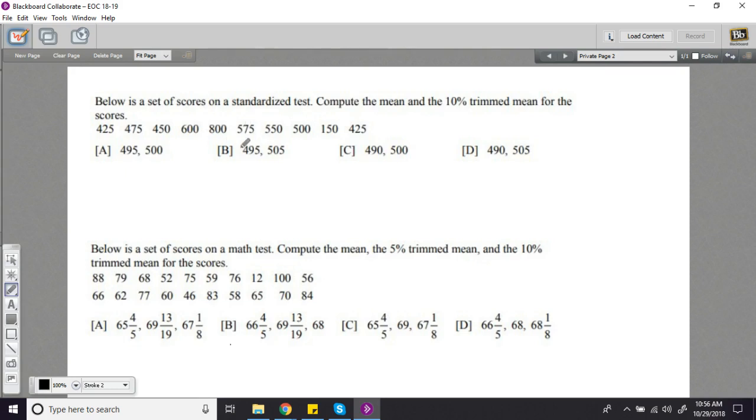In this first problem, we have 10 standardized test scores. To compute the mean, you just add all those together and divide by 10. The 10% trimmed mean means you chop off the top 10% of the data and the bottom 10% of the data, and then compute your mean. In this case, 10% of 10 is 1, so we'd chop off the one lowest score and the one highest score and then compute a mean. Of course, when you're doing that, you'd be dividing by 8 and not by 10 anymore because you just got rid of two of your data points.